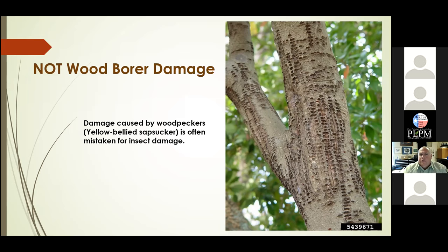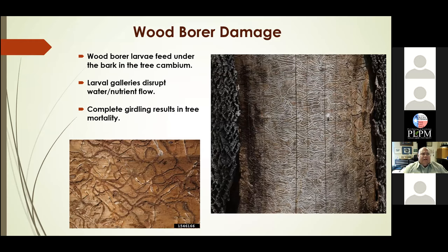What we normally see is one or two emergence holes or an entrance hole, and then when we pull the bark away, we can actually see the damage that causes the tree to die. The larvae of these wood borers feed under the bark in the cambium layer, and it's this feeding and the construction of their galleries that disrupts the water and nutrient flow to the tree. When it's completely girdled all the way around, the tree will die — it can't get sugars from the leaves or water from the roots.